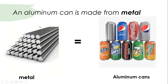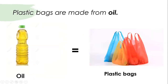Here is another example: an aluminum can is made from metal. And the last example: people use oil to make plastic bags or plastic bottles as well.